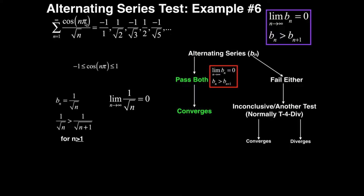We have a trig function here. Let's plug in n=1: cosine of 1·π is cosine of π, which on the unit circle at 180 degrees gives us negative 1. For n equals 2, cosine of 2π is the same as cosine of 0, which is 1. For n equals 3, cosine of 3π is the same as cosine of π, which is negative 1. So the numerator just goes between negative 1, 1, negative 1, 1 forever — this is, in fact, an alternating series.